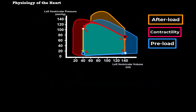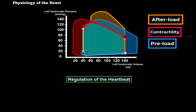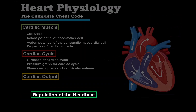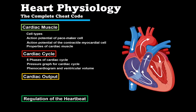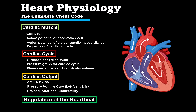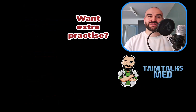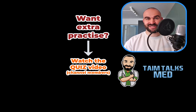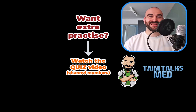Preload, afterload, and contractility have a huge impact on cardiac output. The body adjusts them through three regulatory mechanisms: myogenic regulation, neural regulation, and humoral regulation — all covered in the next video. In this video we covered cardiac output and the pressure-volume curve, along with how preload, afterload, and contractility affect it. If you found this helpful, a follow-up quiz video is available exclusively for channel members. Thank you for watching — see you in the next video.